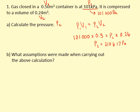What assumptions were made when carrying out the above calculation? We assumed that the temperature is constant, and secondly that none of the gas escaped. In other words, the number of particles is the same before and after.